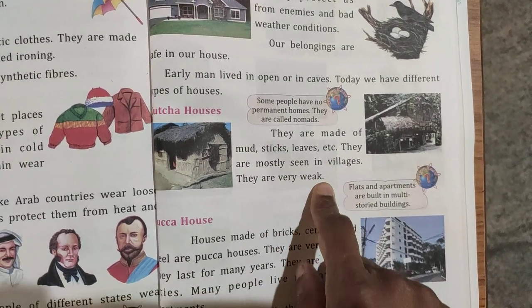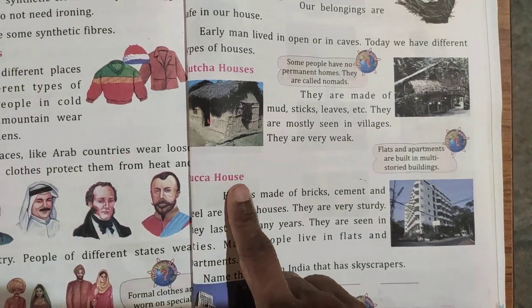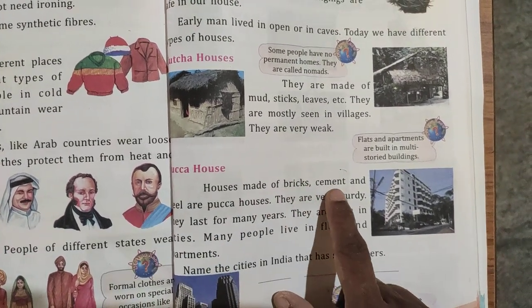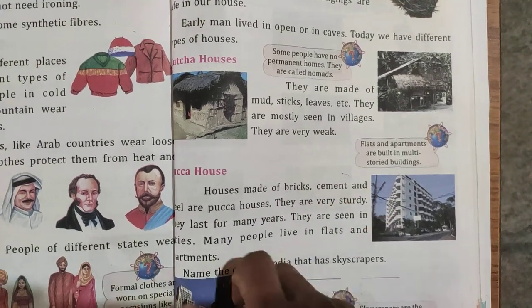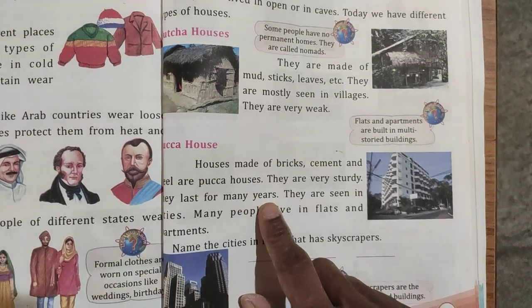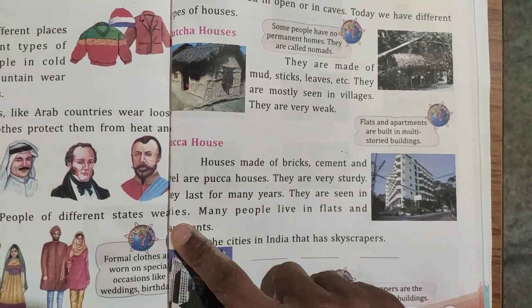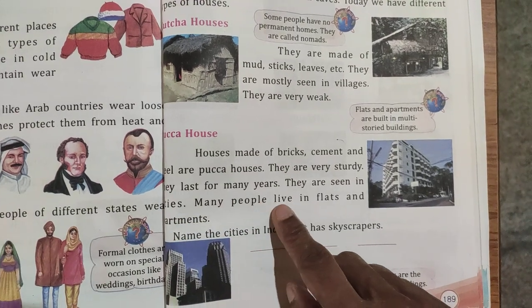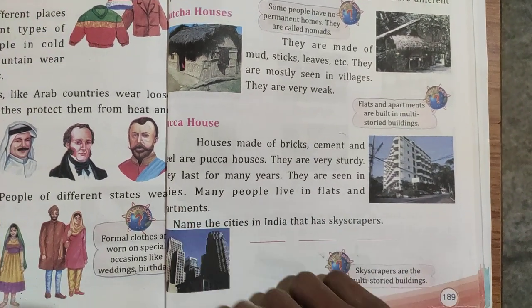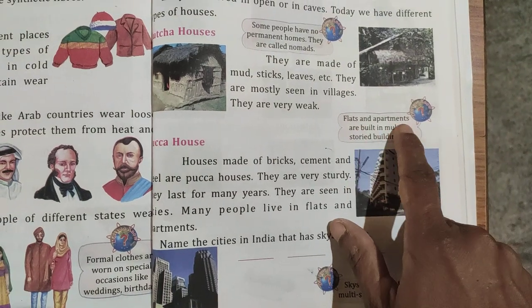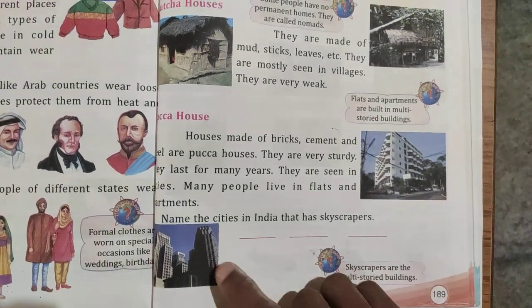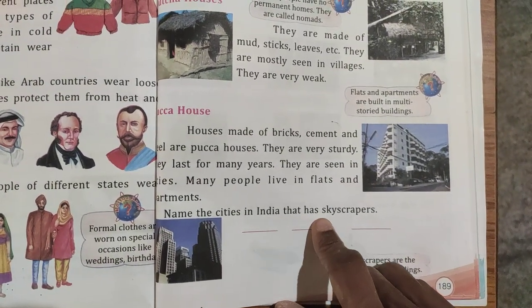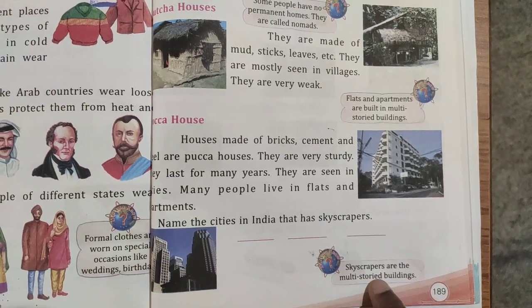Kaccha houses are very weak. Paka houses are made of bricks, cement and steel — they are very sturdy and last for many years. They are seen in cities. Many people live in flats and apartments, which are built in multi-storied buildings. Name the cities in India that have skyscrapers — skyscrapers are the multi-storied buildings.